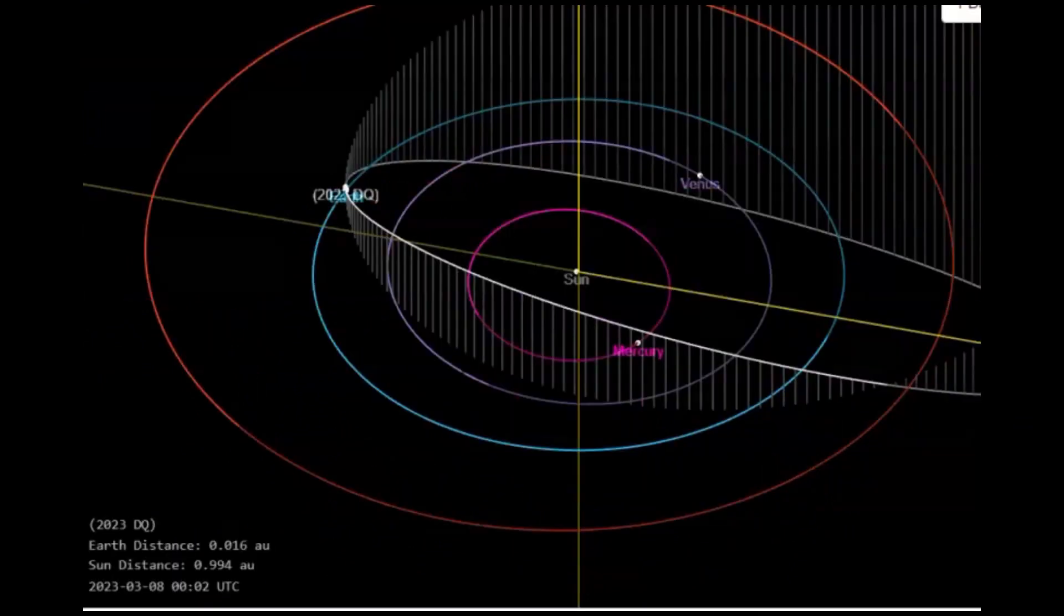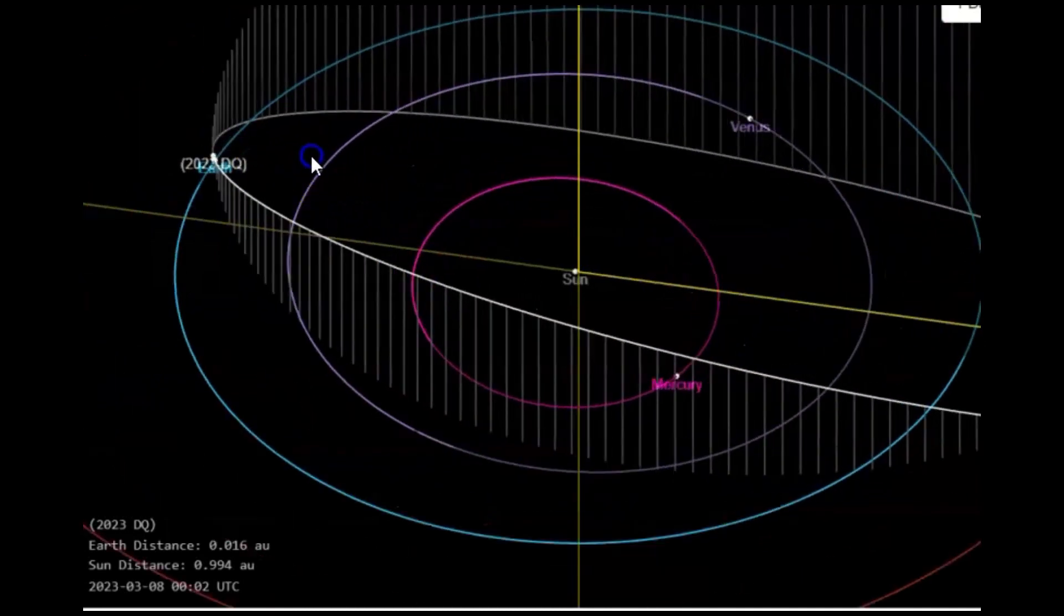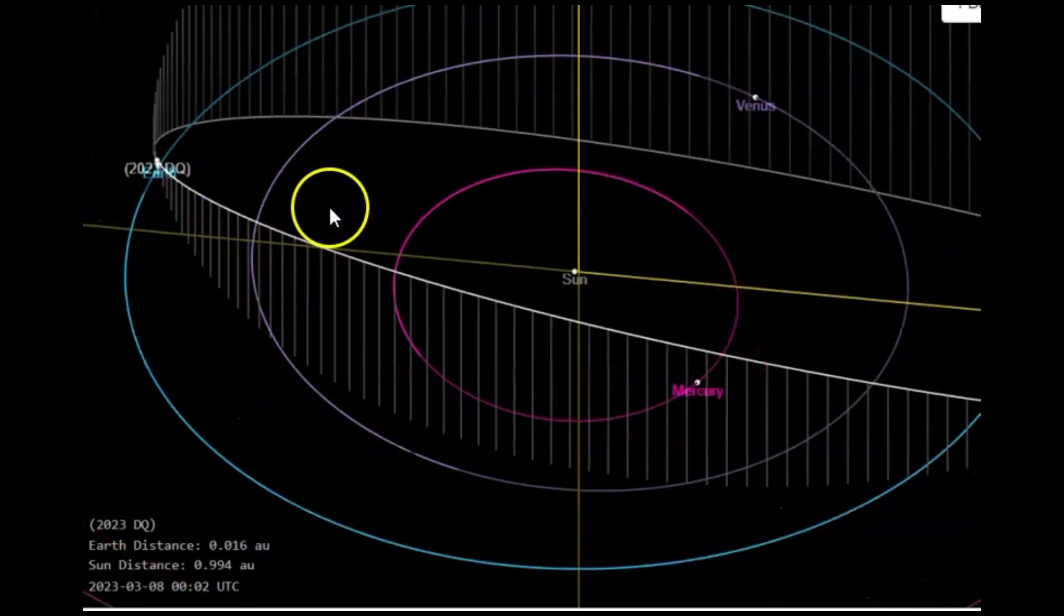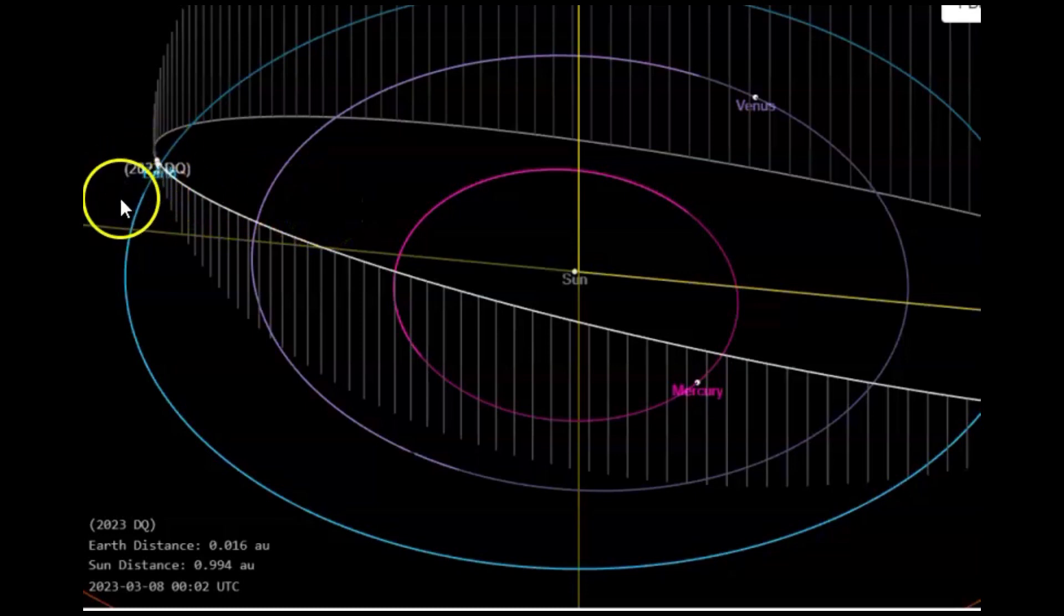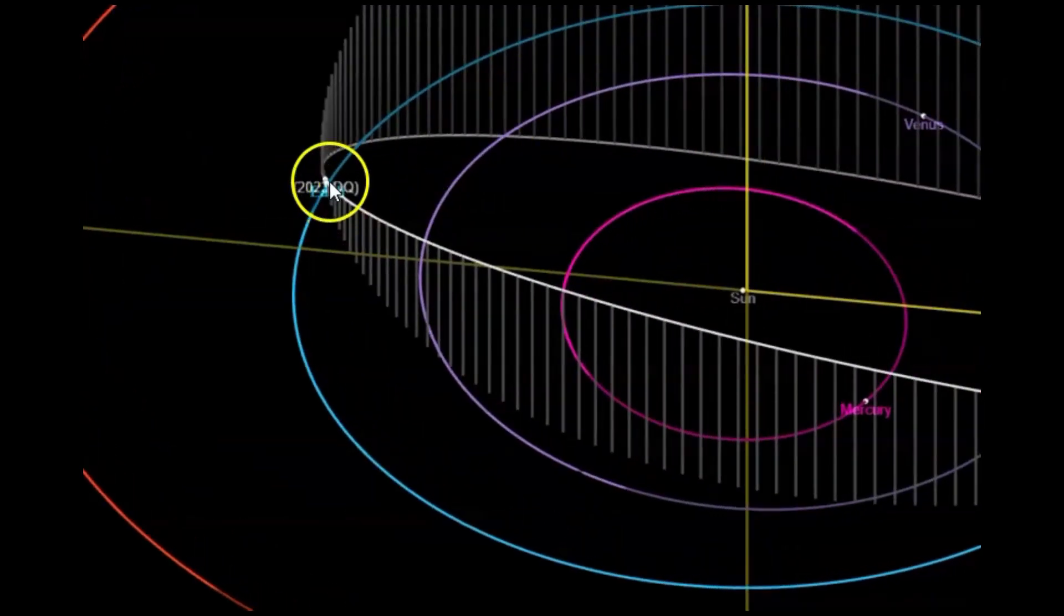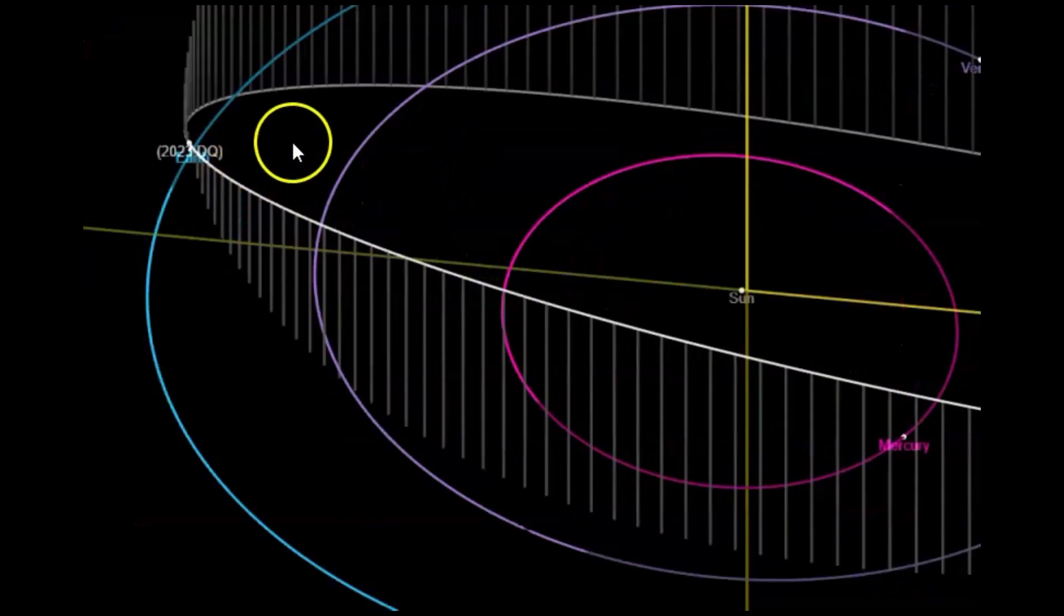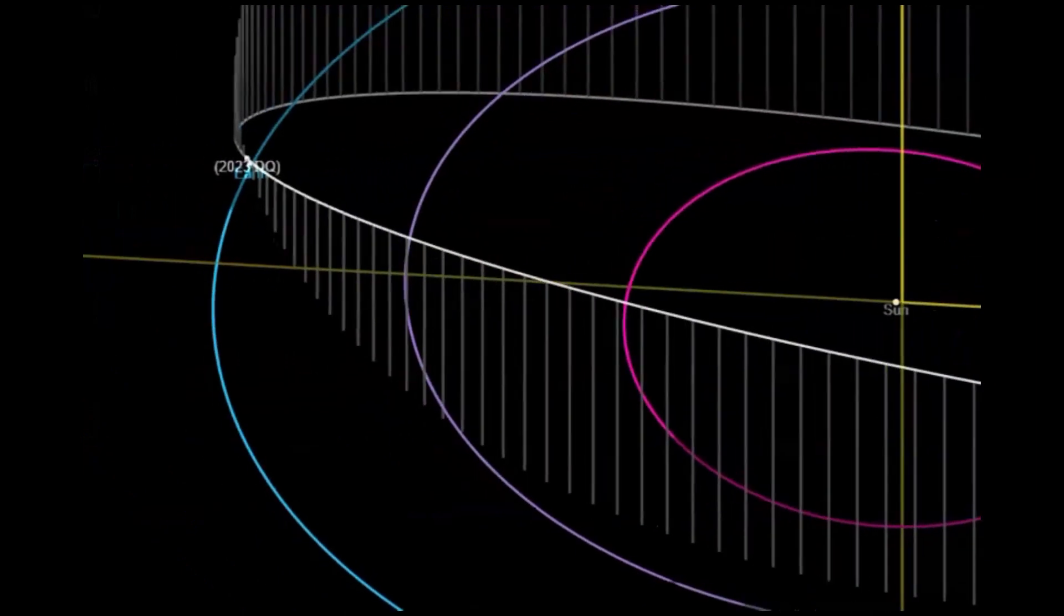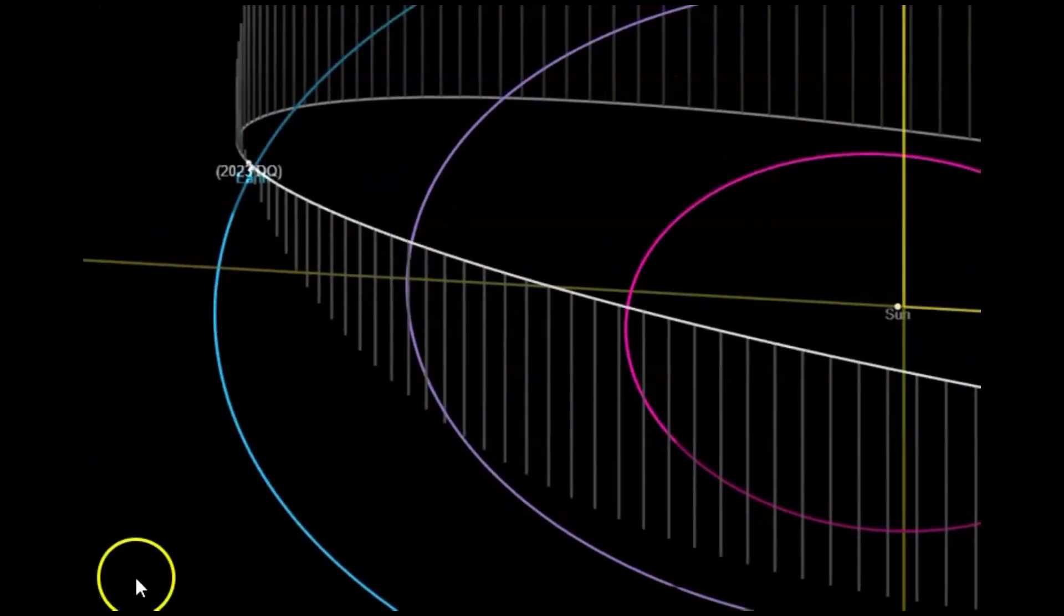I believe this asteroid is supposed to circle around passing Earth every 510 days. And let me, I don't know if I can. No, I can't really bring it in anymore. When I make it larger, yeah, it makes it where it's off the page. I can do full screen. So that's as big as I can get it. Maybe that's why they're looking for an IT person.